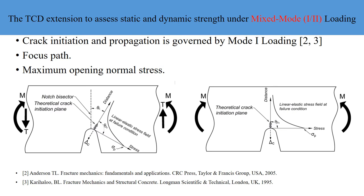Consider this figure on the left, which shows a notched and reinforced concrete specimen subjected to an external bending moment and shear force, resulting in a local mixed mode stress distribution. The maximum opening normal stress is no longer along the notch bisector and can be found by solving finite element models. It is oriented at an angle theta_c from the notch bisector. The focus path is a straight line emanating perpendicularly to the maximum opening normal stress. For mode 1 loading, the maximum opening normal stress is located along the notch bisector, confirming that the general rule is capable of addressing mode 1 cases.